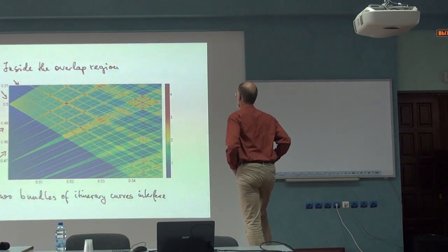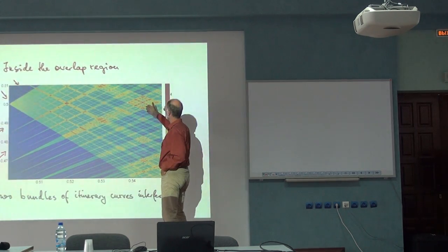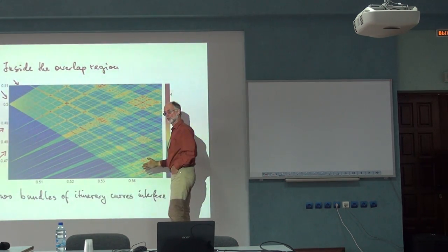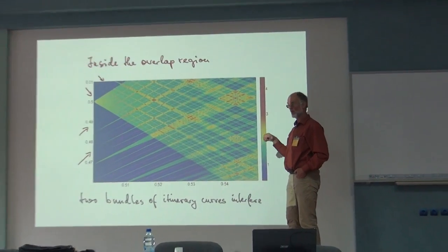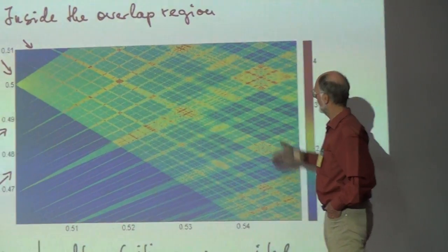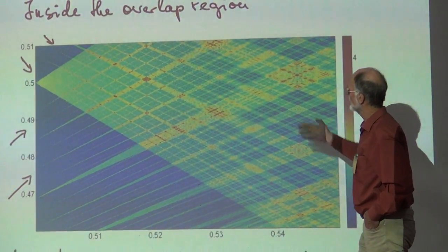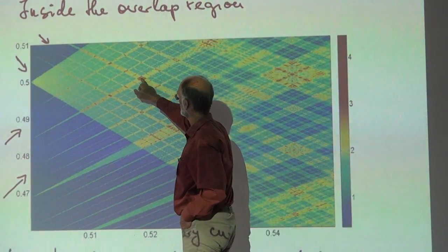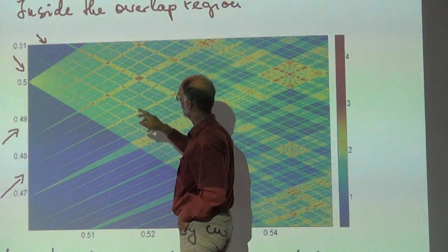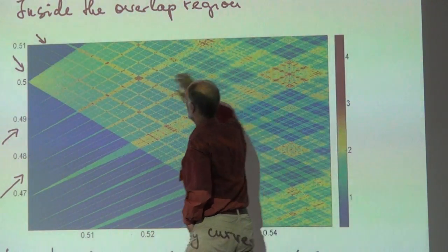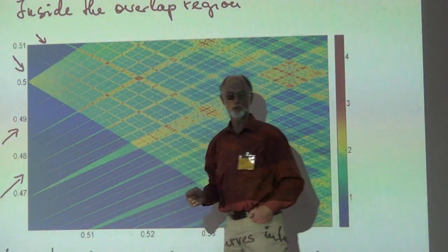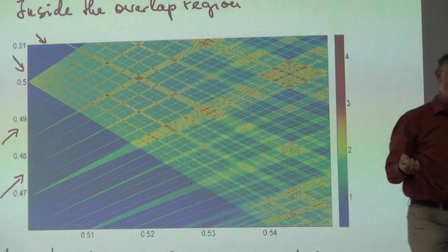So here you have the so-called tribonacci sequence, tribonacci parameter, which is x to the 3 is equal to x squared plus x plus 1. And here you have the next with x to the 4 equal to x to the 3 plus x squared plus, and here you have the next and so on.